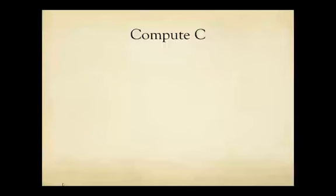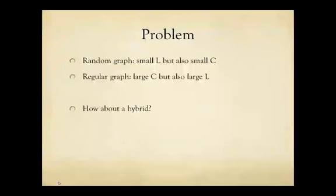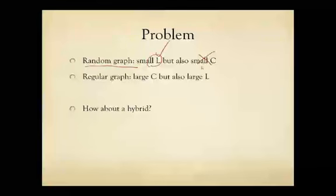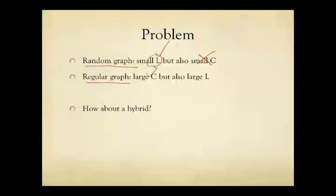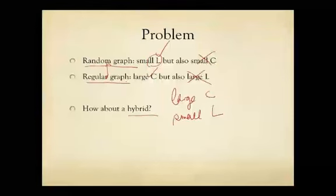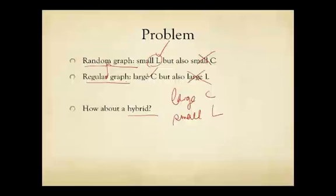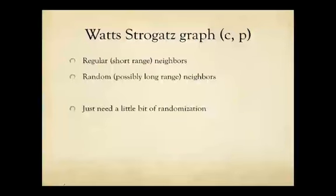So here's the problem. Random graph got small L. Very good. But also small C. Not good. Regular, say ring graph, got a large clustering coefficient C. Very good. But also large L. Not so good. We want a large C like regular graph, but a small L like a random graph. So maybe a hybrid. How about we combine these two ideas together? Start with a regular graph and then add some random links. And that's precisely the Watt-Strogatz model that explains small world.